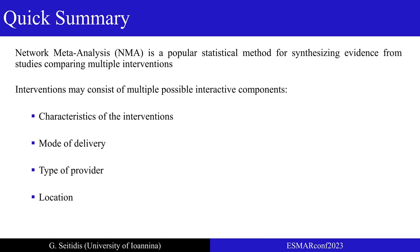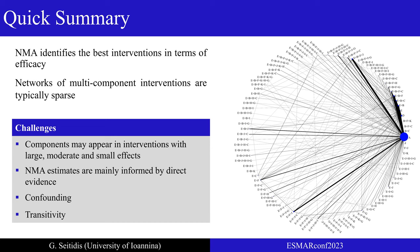Network meta-analysis is an established statistical method for synthesizing evidence from studies that compare multiple interventions. Networks usually include interventions that consist of multiple and possibly iterative components, such as the characteristics of the intervention, the mode of delivery — face-to-face or remotely, individually or in groups — the type of provider, the location, etc. These interventions are referred to in the literature as multi-component or complex. When they are present, the interest usually lies in identifying the best component. Network meta-analysis identifies the best interventions in terms of efficacy, and as a result we can identify the most efficacious combination of components.